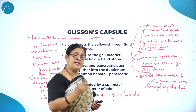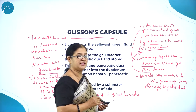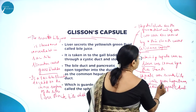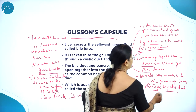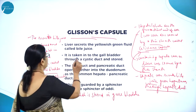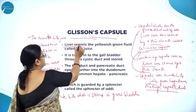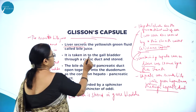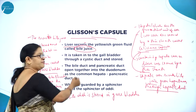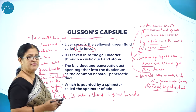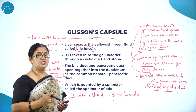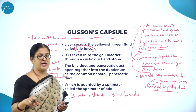Hepatic lobules are the functional units of liver containing hepatic cells or liver cells covered by a thin sheath called Glisson's capsules. These hepatic cells or liver cells secrete bile juice through the hepatic duct. So the liver secretes a yellowish-green fluid called bile juice. We know the liver is an exocrine gland, and the secretions pass through ducts.